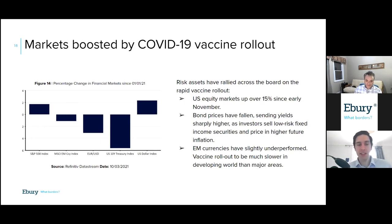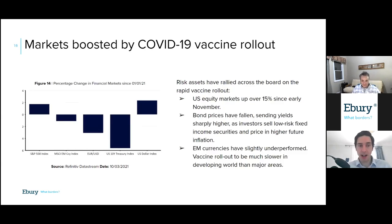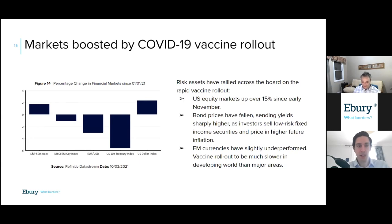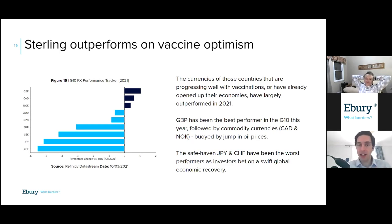Bond markets have sold off sharply, deemed a lower-risk asset and so sold off aggressively. Commodities have rallied — the price of oil has jumped significantly since the start of the year on expectations of an increase in demand. High-risk currencies have rallied — in the G10, the likes of the Australian dollar and New Zealand dollar — but emerging market currencies have underperformed, because vaccination programs are going to be a lot slower in emerging markets than in the developed world. The two worst performers in G10 have been the traditional safe havens — the Japanese yen and Swiss franc — down in excess of five percent against the dollar since the beginning of the year.